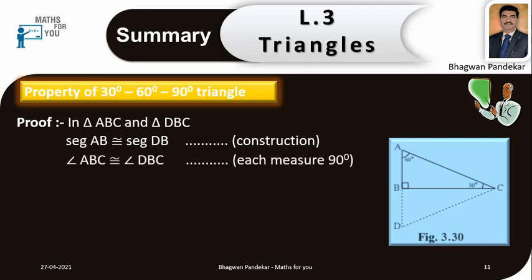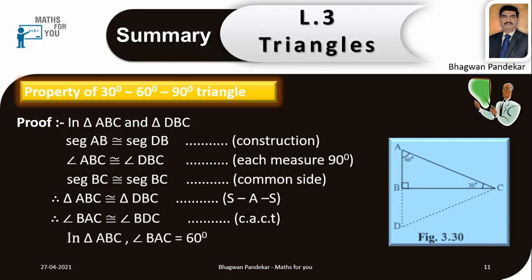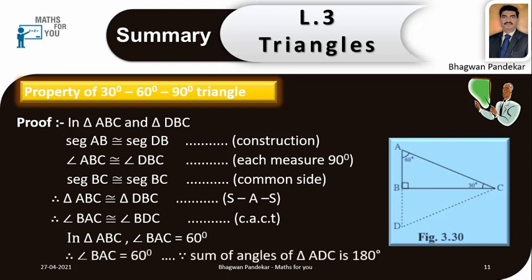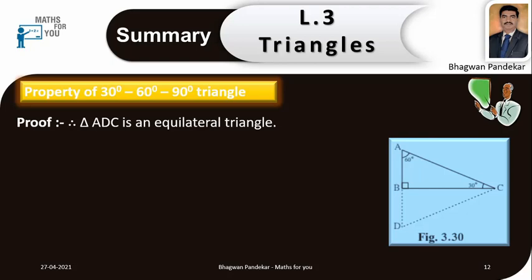In triangle ABC and triangle DBC: segment AB congruent segment DB — construction. Angle ABC congruent angle DBC — each measures 90 degrees. Segment BC congruent segment BC — common side. Therefore, triangle ABC congruent triangle DBC by SAS test. Therefore, angle BAC congruent angle BDC — congruent angles of congruent triangles. In triangle ABC, angle BAC is equal to 60 degrees. Therefore, angle BDC is also 60 degrees. In triangle ADC, the sum of angles equals 180 degrees, so triangle ADC is an equilateral triangle.